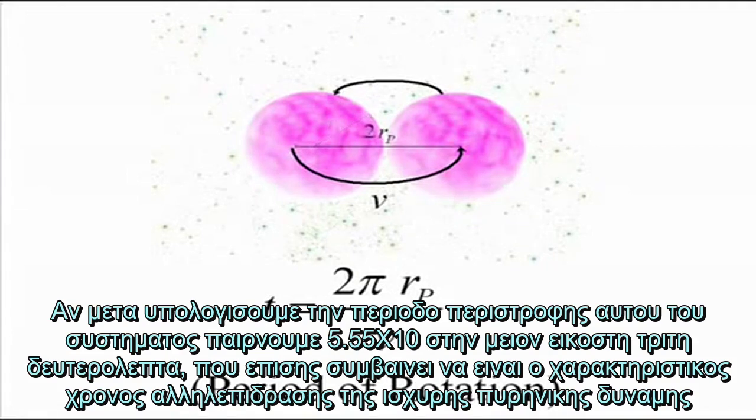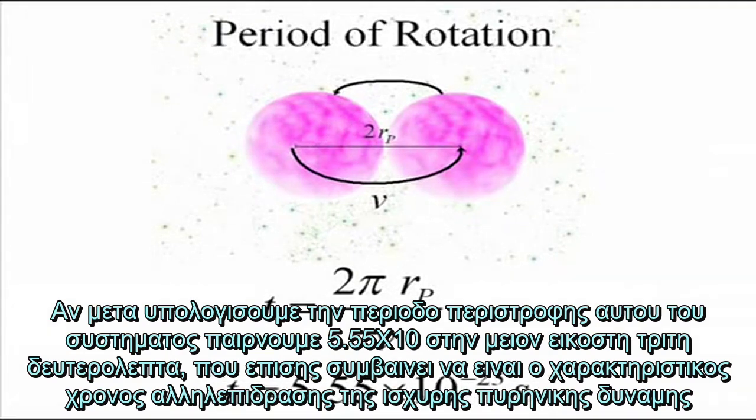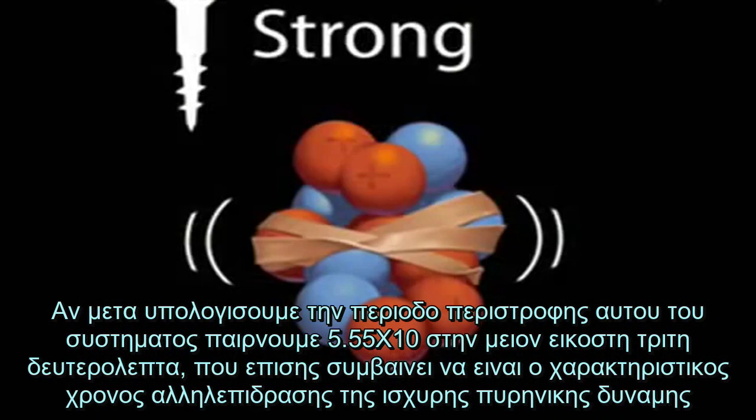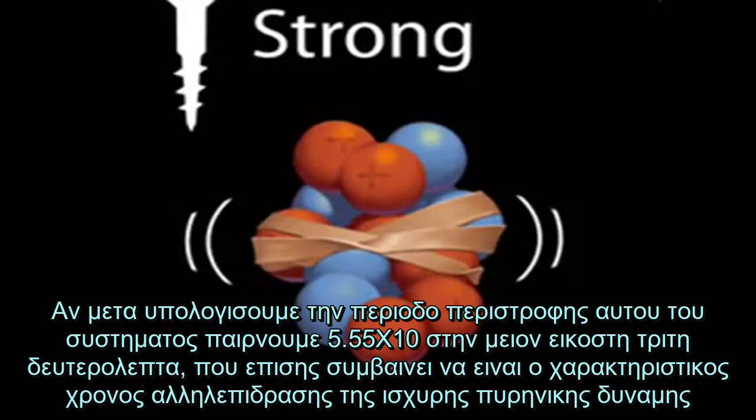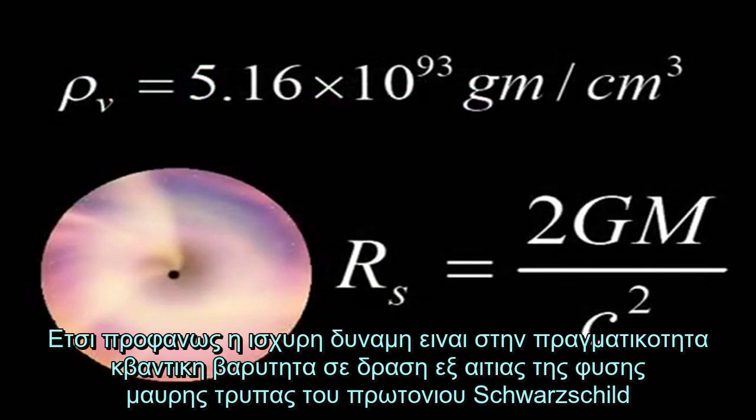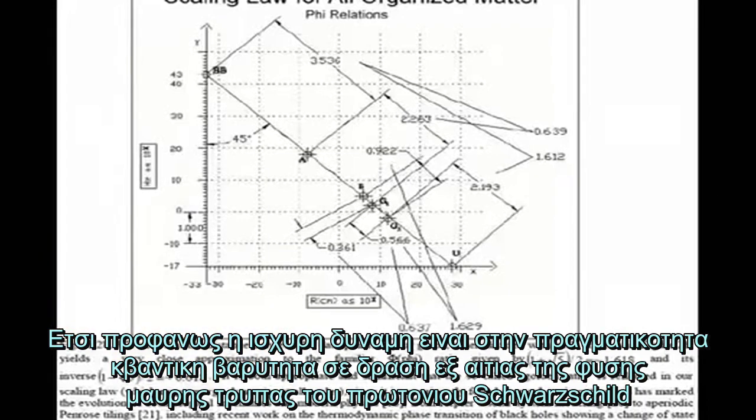If we then calculate the period of rotation of this system, we get 5.55 times 10 to the negative 23 seconds, which also happens to be the characteristic interaction time of the strong nuclear force. So apparently the strong force is actually quantum gravity at work due to the black hole nature of the Schwarzschild proton.